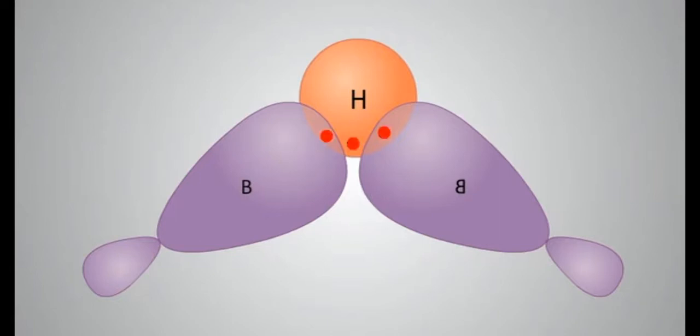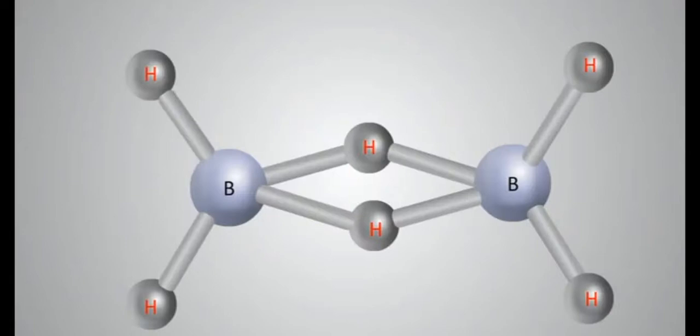Thus, the molecule is short of 2 electrons. In the structure of diborane, as suggested by electron diffraction studies, there are two types of hydrogen atoms.